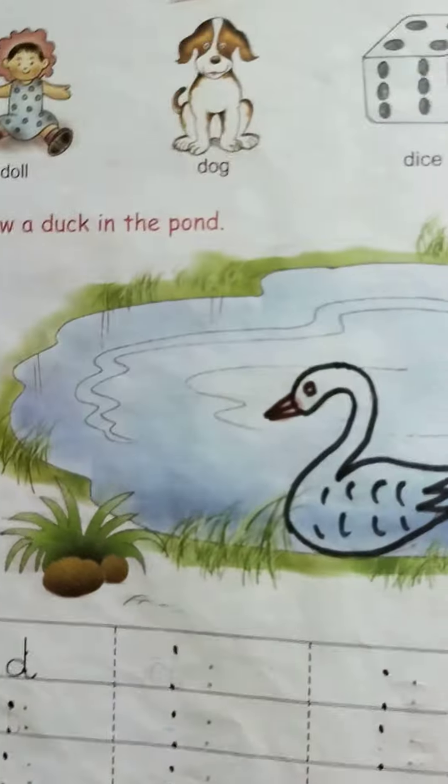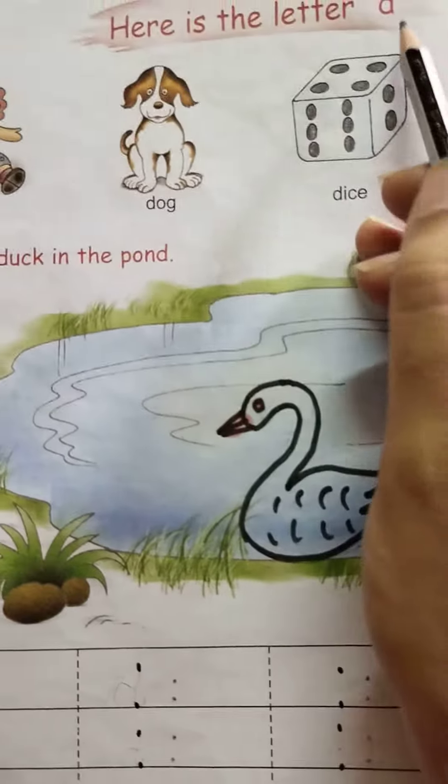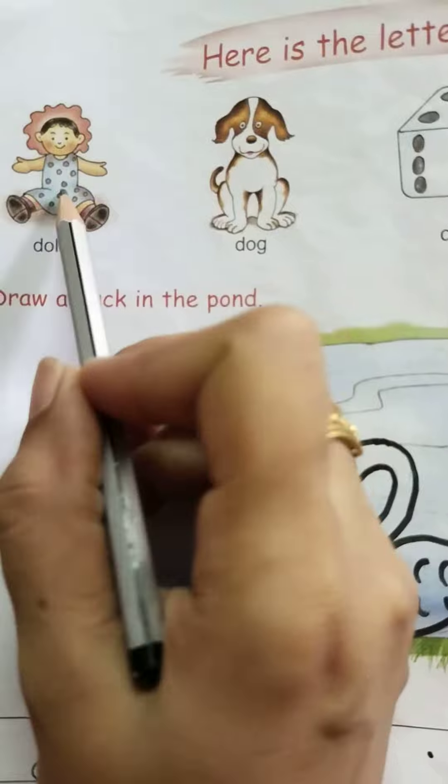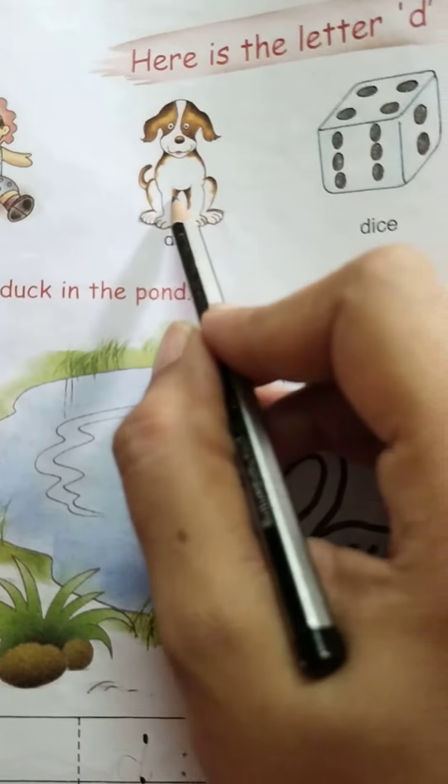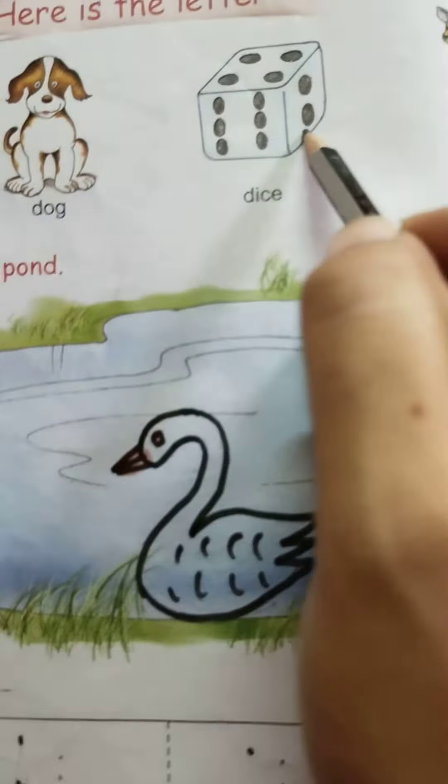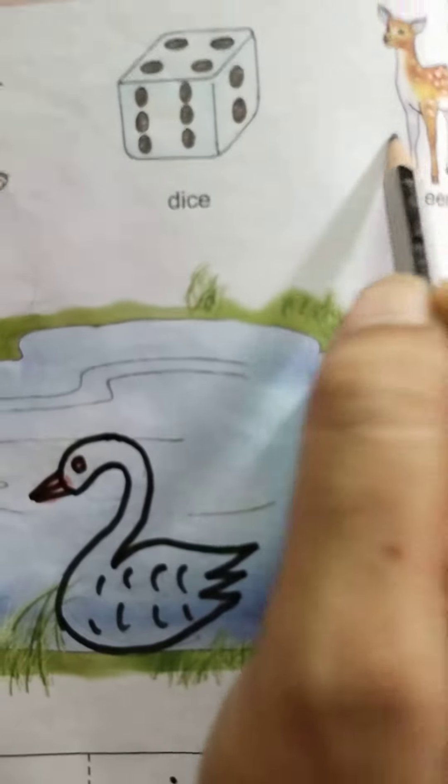Okay, today we will learn something about letter D. D-D door, D-D dog, D-D dice, D-D deer.